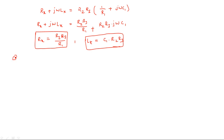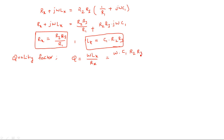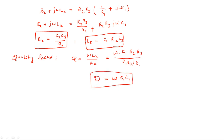In Maxwell's bridge we can also calculate the quality factor. Quality factor of inductance is Q = omega·Lx/Rx. Substituting Lx = C1·R2·R3 and Rx = R2·R3/R1: Q = omega·C1·R2·R3·R1/(R2·R3) = omega·R1·C1. So the quality factor of Maxwell's bridge is Q = omega·R1·C1.